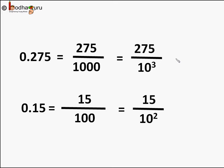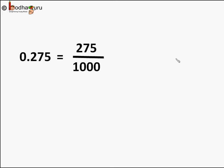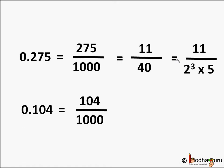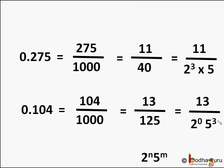While converting decimal to fraction form, we cancel the common factors. So 275 by 1000 becomes 11 by 40, and the denominator 40 can be written as 8 into 5, or 2 to the power 3 into 5. So 0.275 is equal to 11 by (2 to the power 3 into 5). Similarly, 0.104 is equal to 104 by 1000, which equals 13 by 125, and the denominator 125 can be written as 5 cubed.